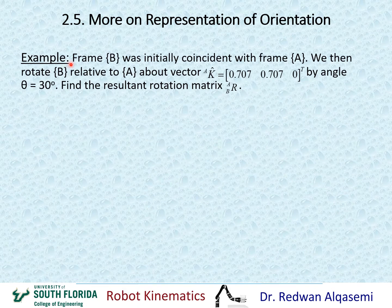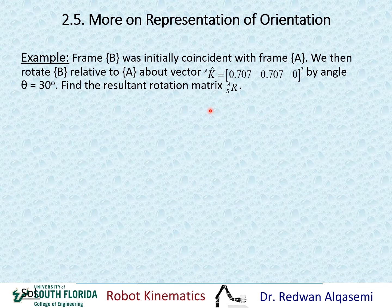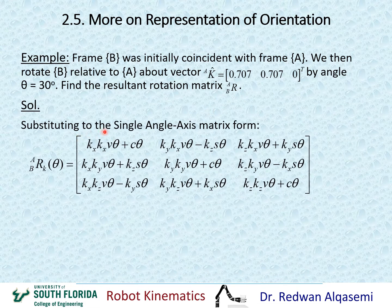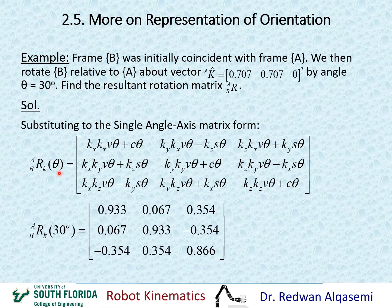Let's take an example. Frame B was initially coincident with frame A. We then rotate B relative to frame A about vector K = [0.707, 0.707, 0] transpose by angle theta = 30 degrees. We need to find the resultant rotation matrix R_B/A. It's straightforward: substitute directly into the single angle-axis matrix form R(K, theta), using KX, KY, KZ from the given vector and theta = 30 degrees. The result is a specific 3×3 matrix.